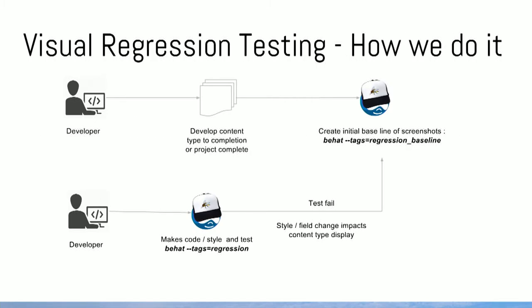The usual process is two-pronged. The developer, once a content type or the entire project is complete, comes up with some baseline images or baseline tests. I'll give a quick demo of that. They run a set of BHAT commands to create those baselines. Then maybe a month later they come back, decide they want to work on something else in the project, make code changes, and then run a different suite of tests to compare against that baseline.